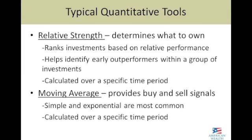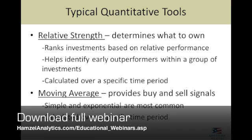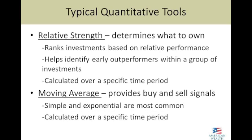I'm always curious to see what people are using for quantitative tools as they manage portfolios. The two I run across most commonly are relative strength — determining what to own within the portfolio — and moving averages. If relative strength isn't something you're familiar with, it's basically comparing a list of investments to something else, typically comparing the performance of foreign investments to the S&P 500, or financial stocks to the S&P 500, to rank which ones are actually outperforming the broad market.